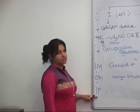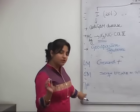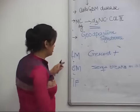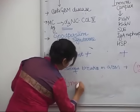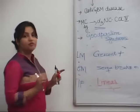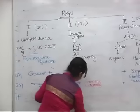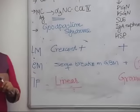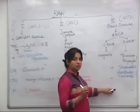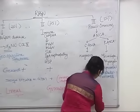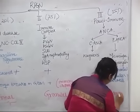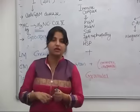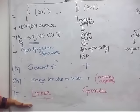On immunofluorescence: anti-GBM disease (Type 1) shows a linear pattern of immunofluorescence. Pauci-immune (Type 3) shows no deposits at all, because it is non-complement mediated. This is a very important point. Plasma pheresis can cure Type 1 RPGN by removing the antibody, whereas Type 2 must be treated by addressing the underlying cause.